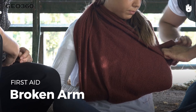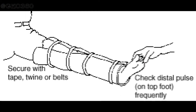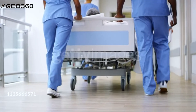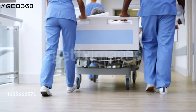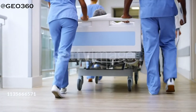If you apply a splint or a bandage, check the circulation below the bandage or splint — that is, check circulation at the level of the fingers. Arrange appropriate transport to the nearest healthcare facility available.